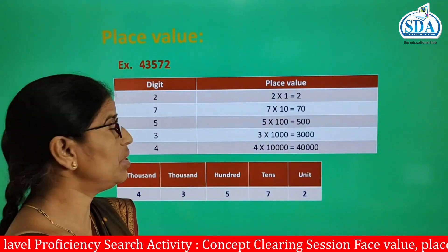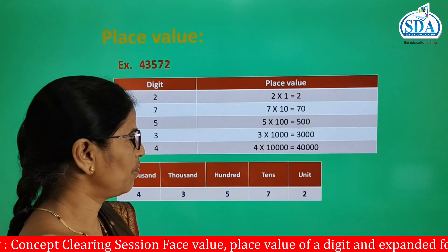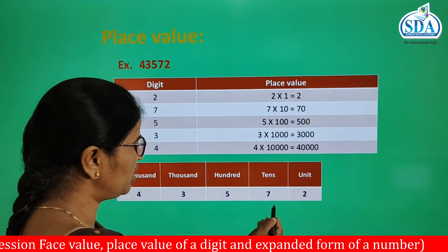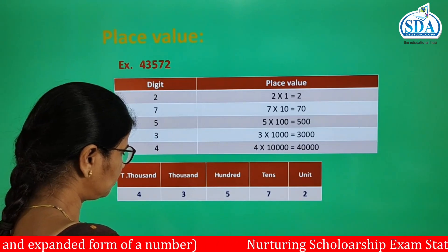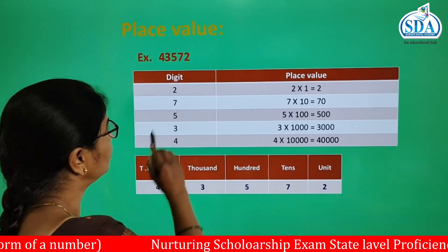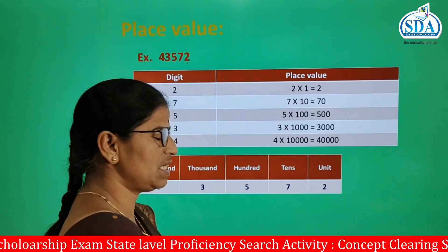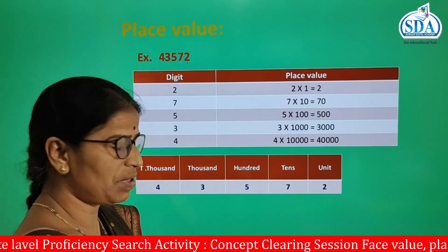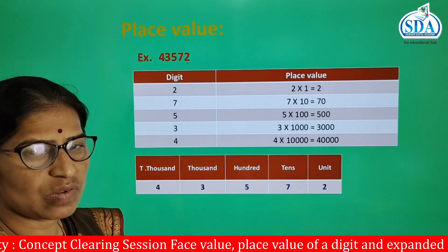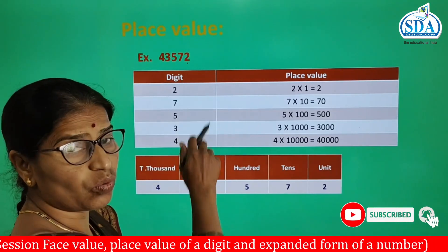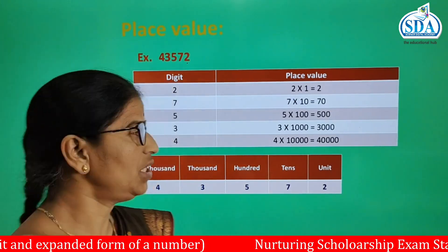Here there is an example. The number given is 43,572, and the places of each digit are mentioned in this chart. The place of digit 2 is the units place. Digit 7 is at the tens place, 5 is at the hundreds place, 3 is at the thousands place, and 4 is at the ten-thousands place. The place value of each digit is determined from its place, and here it is explained.